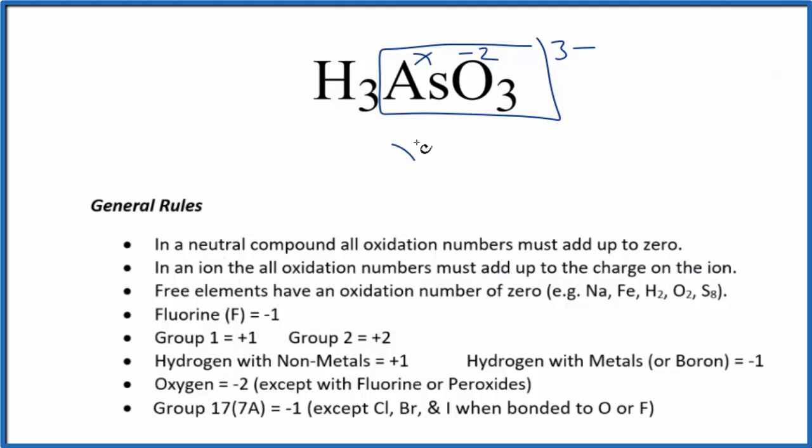So we could say X minus two times three equals this minus three. This is the oxidation number. So X, we have minus six. We add six to both sides. We end up with X equals a positive three, which is the same thing we got before.